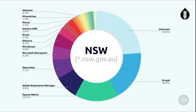New South Wales. A bit different here, but Drupal's still in the lead. Squiz at 16%, with a higher amount of Adobe. And for some reason there's a lot of schools in New South Wales that need a DXP. And a pretty long tail actually here.